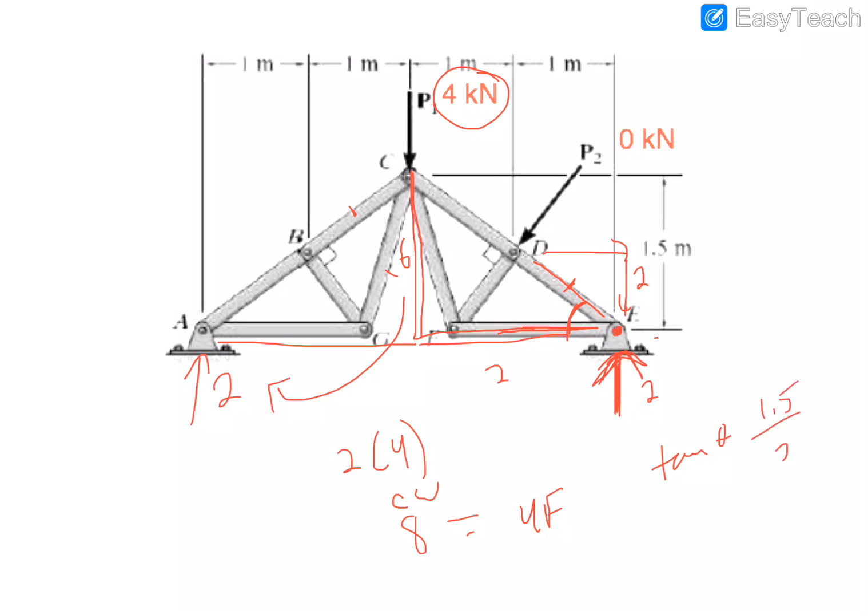If I do that, 1.5 divided by 2, inverse tangent gives me 36.9 degrees. I'm going to take 90 minus that to give me this angle in here. 90 minus 36.9 would be, that angle in there would be 53.1.